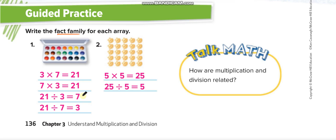This next array has five rows and five columns — both are five. Since it's a square array, you can write only two sentences: one multiplication and one division. Five times five equals twenty-five, and twenty-five divided by five equals five.